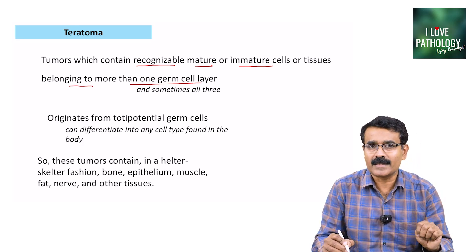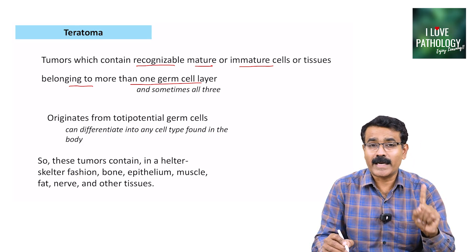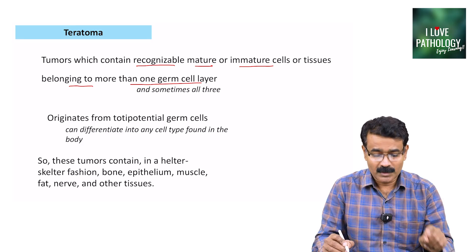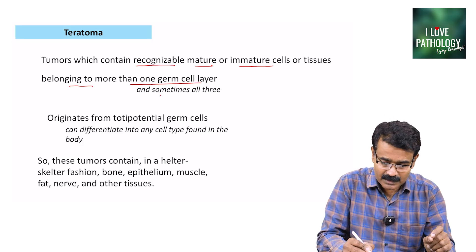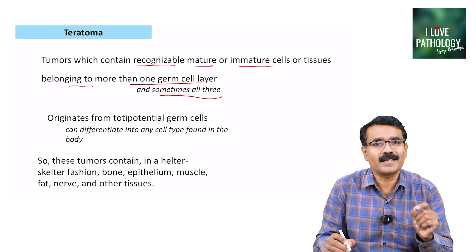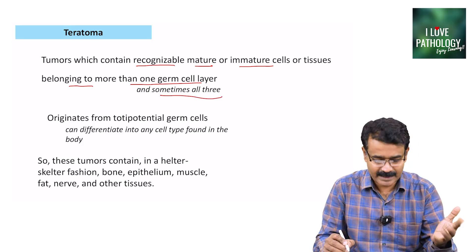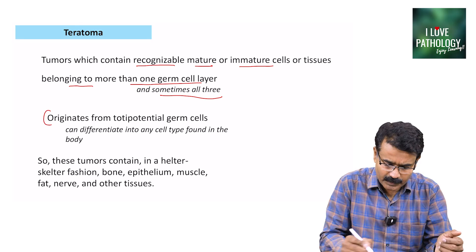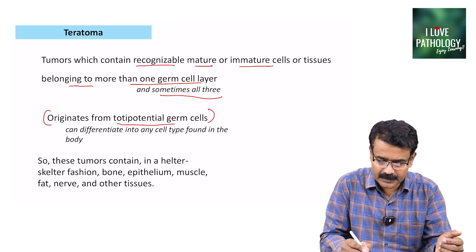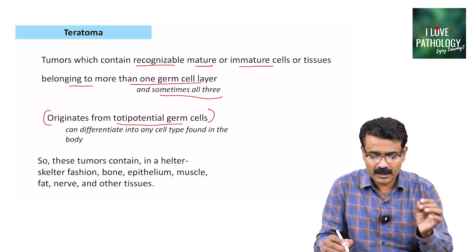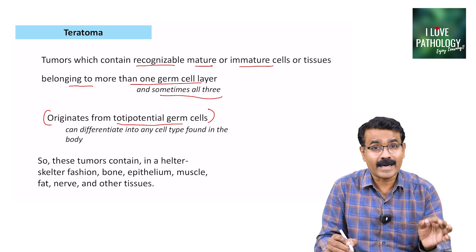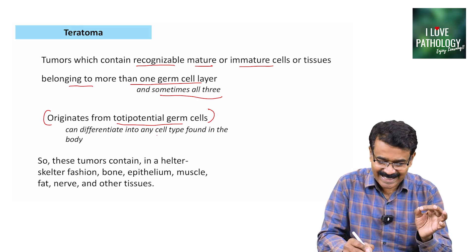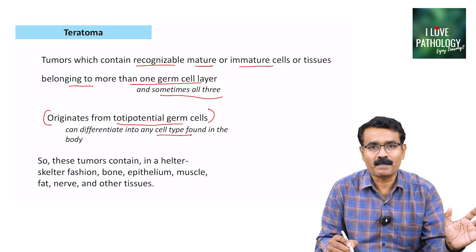There are three germ cell layers: ectoderm, mesoderm, and endoderm. Teratomas contain more than one germ cell layer derivative — sometimes all three germ cell layer derivatives can be seen. The basic thing to understand is they arise from totipotential germ cells, and that is why they can differentiate into any cell type found in our body.